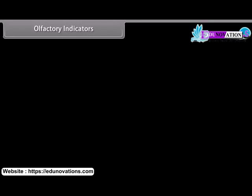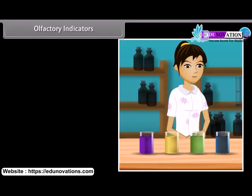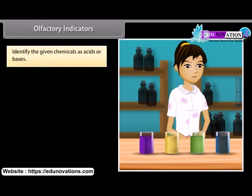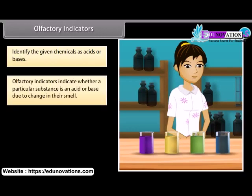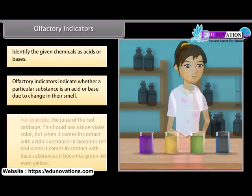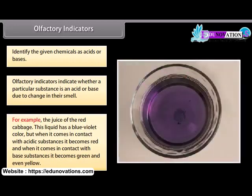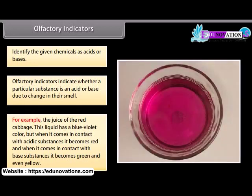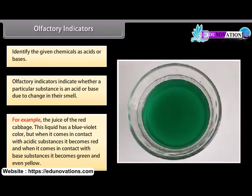Olfactory indicators: Suppose you are given four chemicals and asked to identify them as acids or bases. We have olfactory indicators which indicate whether a particular substance is an acid or base due to change in their smell. They are used in the laboratory to test whether a solution is a base or an acid by a process called olfactory titration. An olfactory indicator works on the principle that when an acid or base is added to a substance, its odor cannot be detected. For example, the juice of the red cabbage — this liquid has a blue-violet color, but when it comes in contact with acidic substances it becomes red, and when it comes in contact with base substances it becomes green and even yellow.